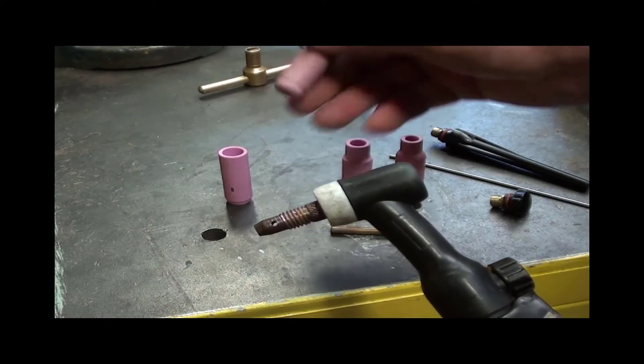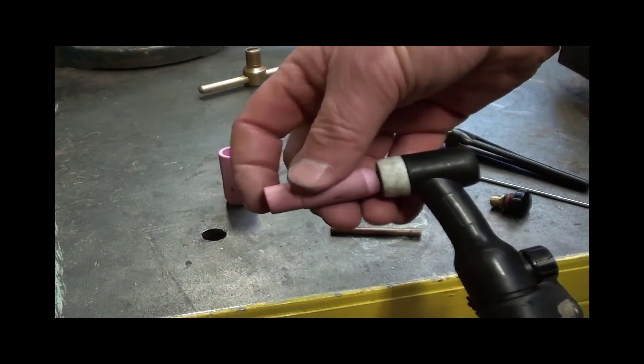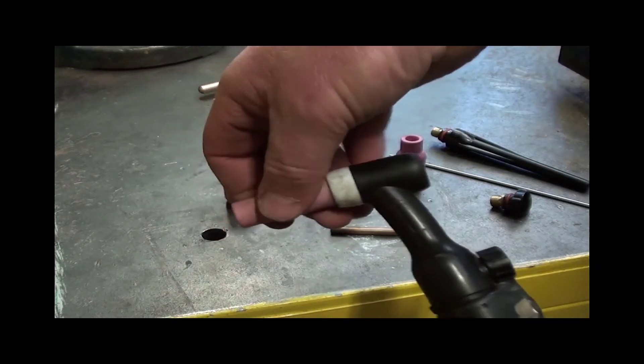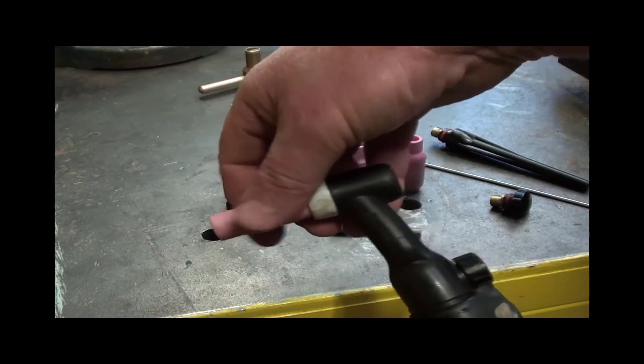We'll put a number 7 on it today for ceramic. So that just screws onto the collet holder. Just do it finger tight once again. You don't have to over tighten it.